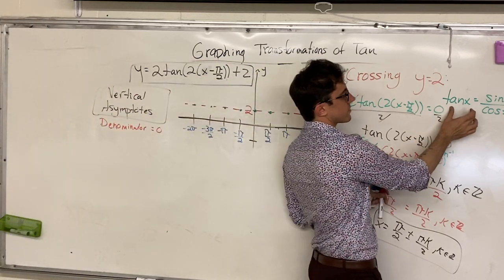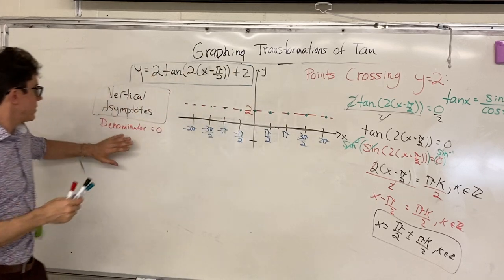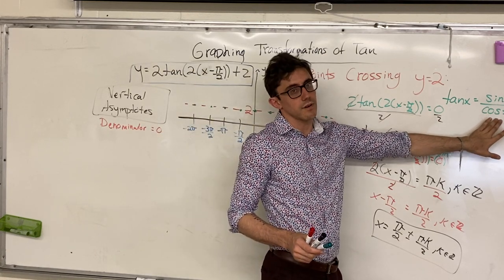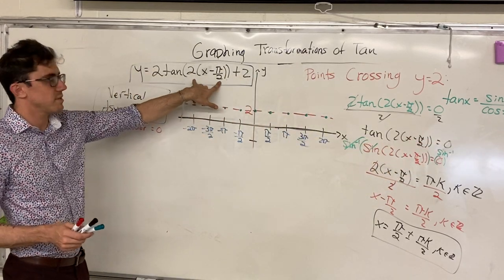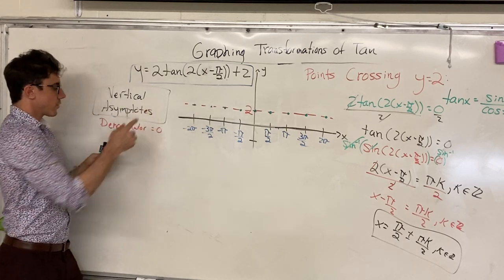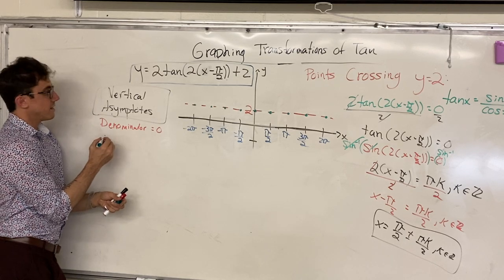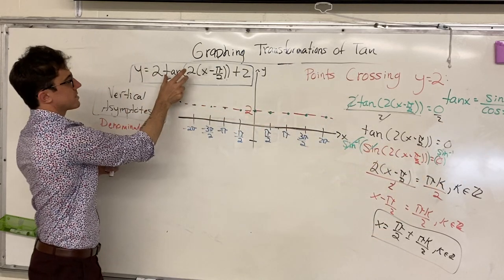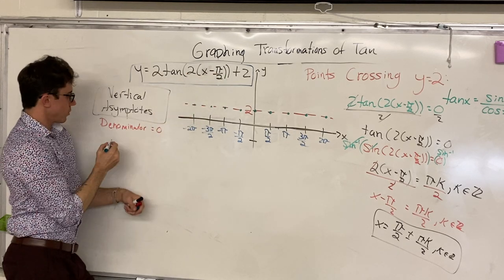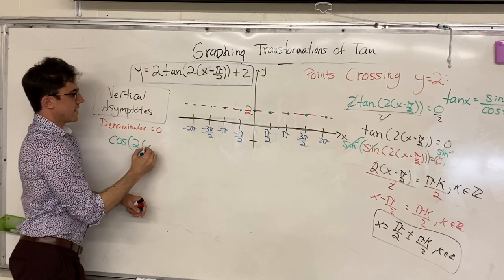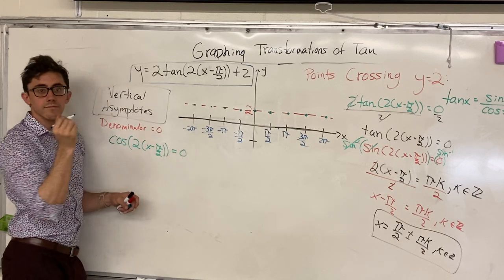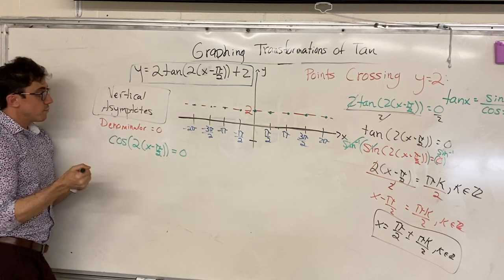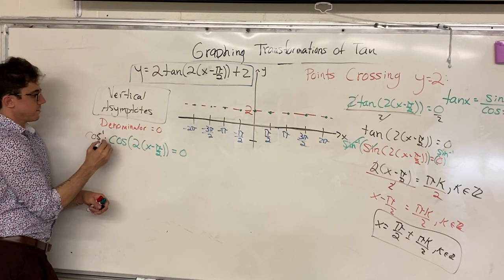I'll remind you that the tan of x function is defined as sin of x over cos of x. So the denominator of our function being equal to 0 directly implies that cos of x is equal to 0 — or in our case, the cos of this entire argument is equal to 0. So we're going to get our vertical asymptotes at the points where cos of 2 bracket x minus π over 2 is equal to 0.